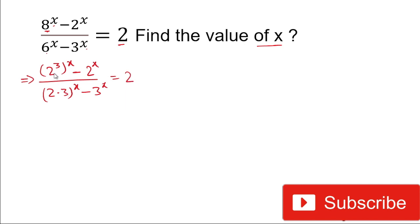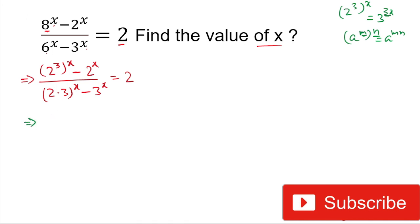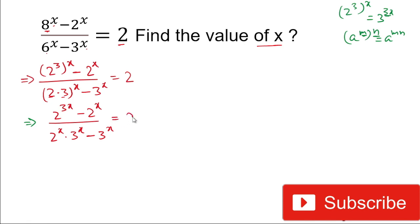Simplifying (2³)^x gives us 2 to the power 3x, because when we have a power raised to another power, we multiply the exponents. So the numerator becomes 2 to the power 3x minus 2 to the power x. In the denominator, since the bases are different but the power is the same, we write 2 to the power x multiplied by 3 to the power x, minus 3 to the power x, equals 2.